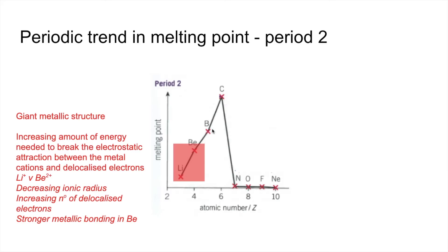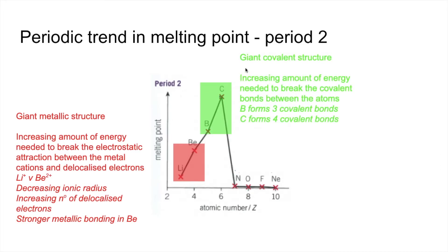The next two elements have higher melting points again because they have the giant covalent structure, so an increasing amount of energy is needed to break the covalent bonds between the atoms. Carbon has the highest melting point because carbon forms four covalent bonds, so there are more bonds to break compared to boron's three.